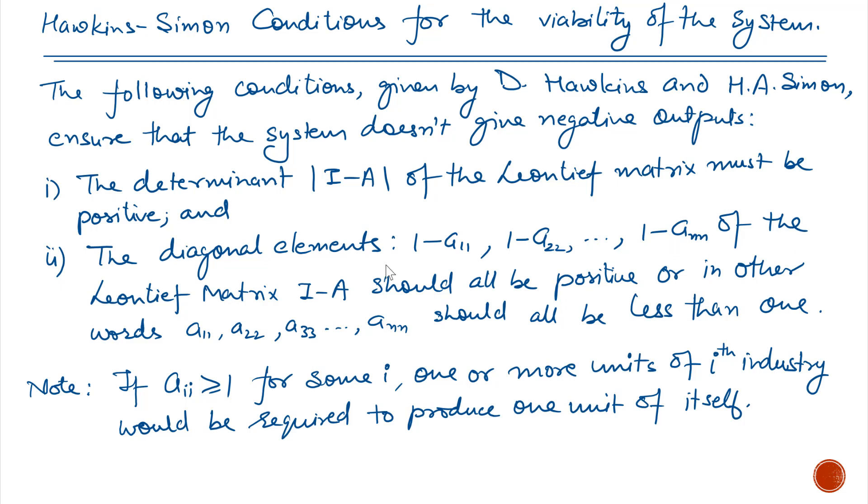1 minus ANN of the Leontief matrix should be positive, or in other words, A11, A22, A33, and so on should all be less than 1. Remember that if AII is greater than 1 for some i, one or more units of the i-th industry would be required to produce one unit of itself.